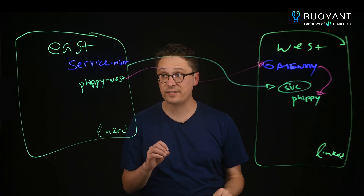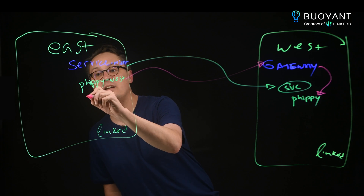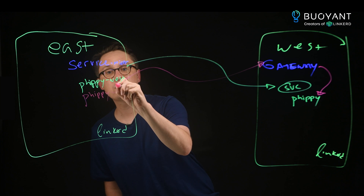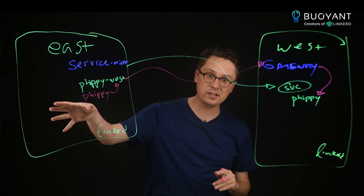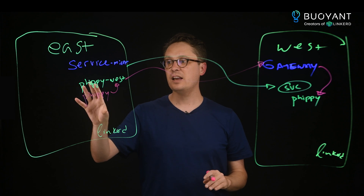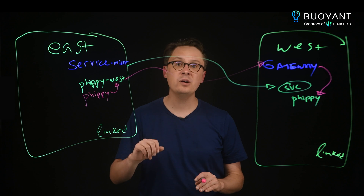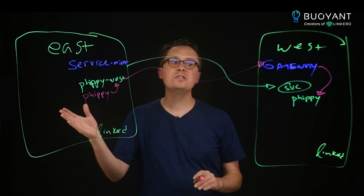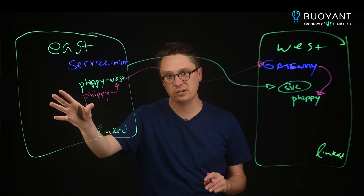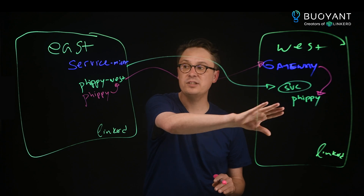You can also add a traffic split in this cluster, so that pods don't have to know about the West cluster explicitly. This can be toggled either by a failover operator like the Linkerd failover operator, or manually to shift traffic between clusters — so that if the FIPPY pods in the East cluster are unavailable, we can transparently fail back to the pods in the other cluster.